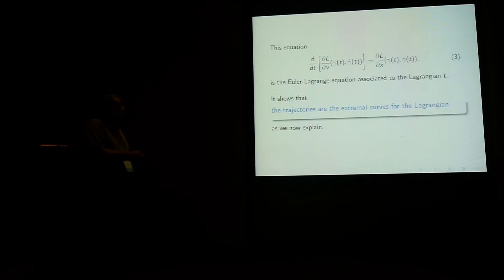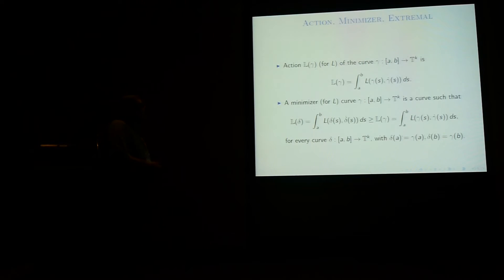Which means that the trajectories are the extremal curves for the Lagrangian. So if you don't know what extremal curves are, I'm going to explain it now. In fact, the three key words are action, minimizer, and extremal. So the action for a curve is simply you just evaluate the Lagrangian along the speed curve of the curve, and then you integrate between the time on which the curve is defined.